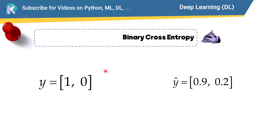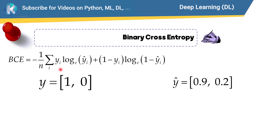Now let's talk about binary cross entropy, which is used for binary classification. Suppose we have two data points. The actual label for the first is 1 (class 1), and the actual label for the second is 0. These are the probabilities of belonging to class 1: 0.9 for the first data point and 0.2 for the second. To calculate binary cross entropy we use the formula: for each data point, compute y_i × ln(ŷ_i) + (1 − y_i) × ln(1 − ŷ_i).